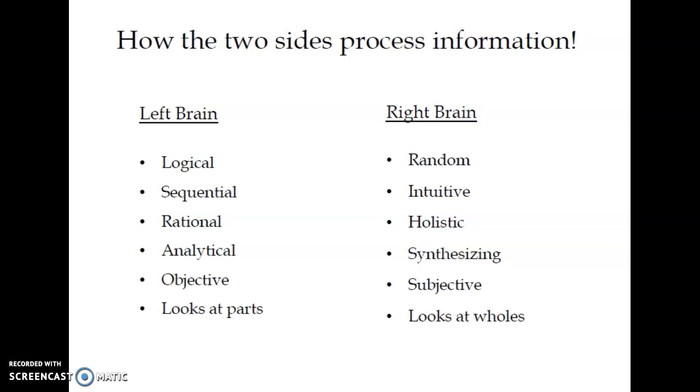How does the left brain process information? We can see here it is logical, sequential, rational, analytical, objective, and looks at parts. This means that the left brain processes information in really detailed ways. Most researchers and scholars use this one.